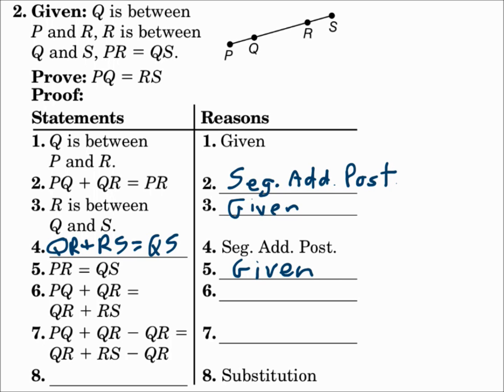I still don't have PQ and RS in the same equation, and I need them to be. Notice PR equals QS, and PR is in statement two, QS is in statement four. Since those equal each other, then PQ plus QR has to equal QR plus RS. When things equal each other, you can substitute them in. Since PR equals PQ plus QR, then QS equals QR plus RS.